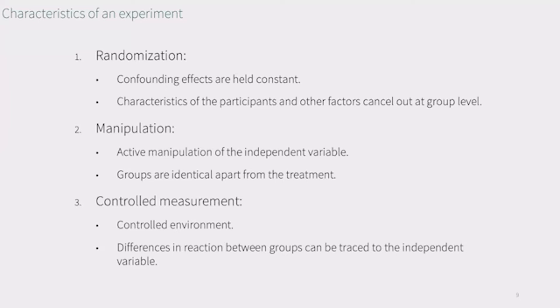The second characteristic is that of manipulation. In contrast to other methods of scientific inquiry, in experiments, we actively manipulate the independent variable, which is called the treatment. Apart from the treatment, all groups in an experiment are identical.